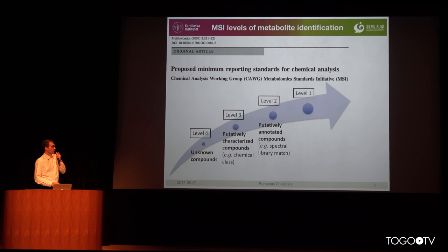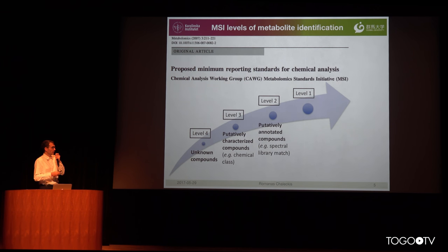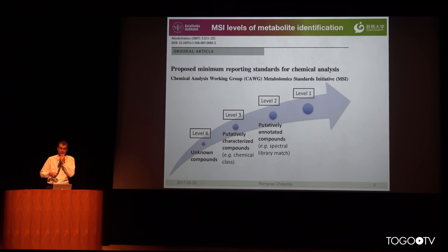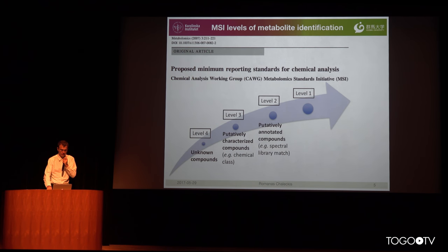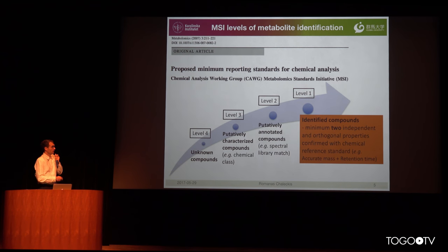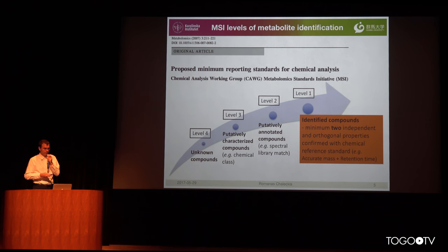Moving up the scale of metabolite identification, from spectra we can have a spectral match in a database such as MassBank, so we can be more sure about the identity of the metabolite. The current standard — level one — requires a minimum of two orthogonal features matched against a purchased chemical standard.